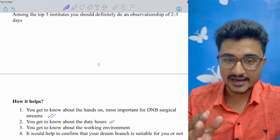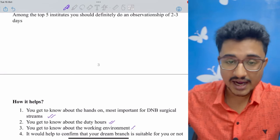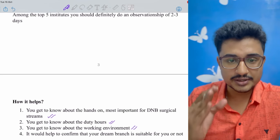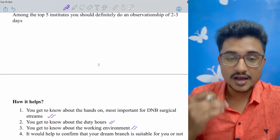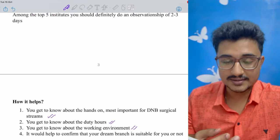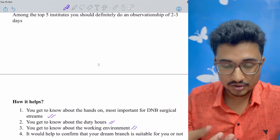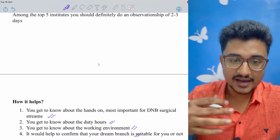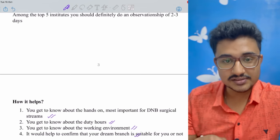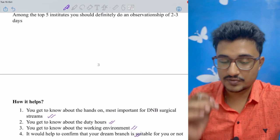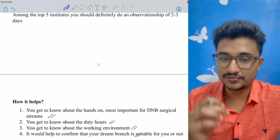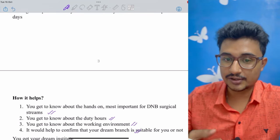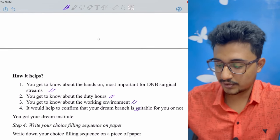Number three, you would get idea about the working environment. How is the working environment? How is the communication between the seniors and the consultants? How is the communication between the residents? Are they friendly or is there any toxicity? And number four is that you would have a solid understanding whether this stream is really suitable for you, whether your dream branch is really suitable for you or not. Now after these four points, you can easily categorize those five institutes into top one and you would have a sequence in which college you can go for the counseling.